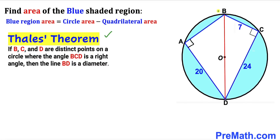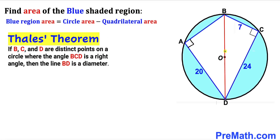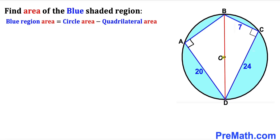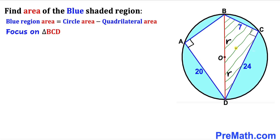Now let's recall Thales' theorem. If points B, C, and D are distinct points on the circle and the angle at C is 90 degrees, then by Thales' theorem, line BD is the diameter — meaning BD passes through center O. Let's assume OD equals radius R and BO equals radius R as well.